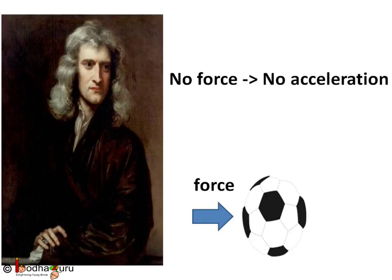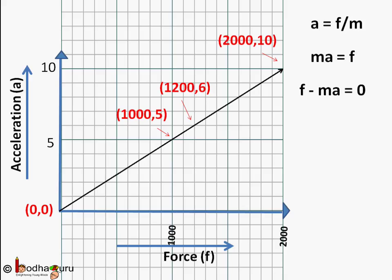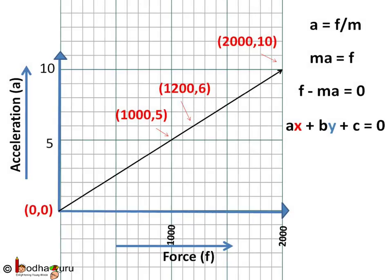Does every graph of a linear equation pass through the origin? No. Let us find out which ones do. Recalling our formula A = F / M, with F on the x-axis and A on the y-axis, we can rewrite it as MA = F, or F − MA = 0. Comparing this to the standard form AX + BY + C = 0, we see that the constant term C = 0 in this equation. So if C = 0, the graph of that linear equation will pass through the origin (0, 0), like F − MA = 0.